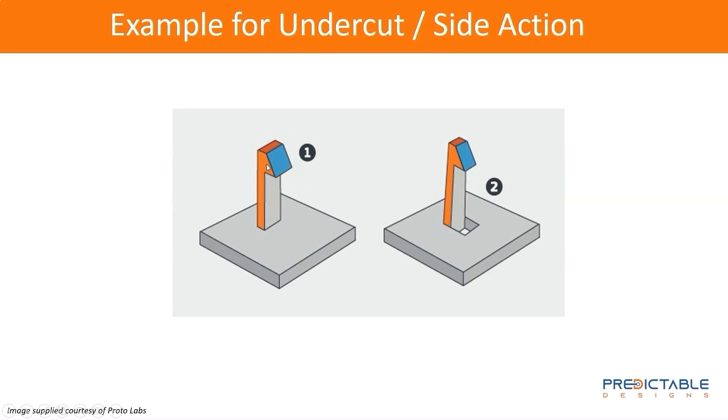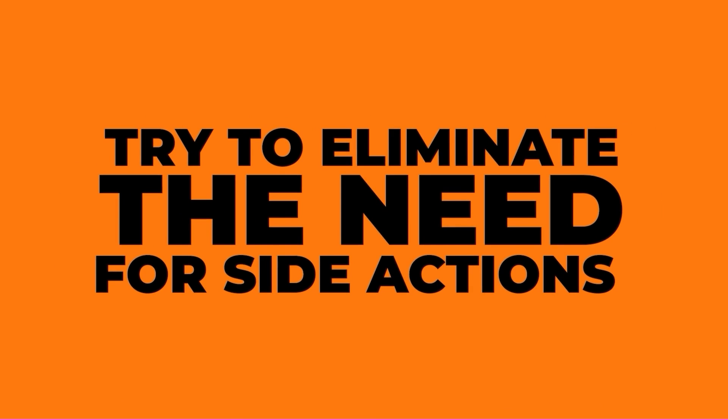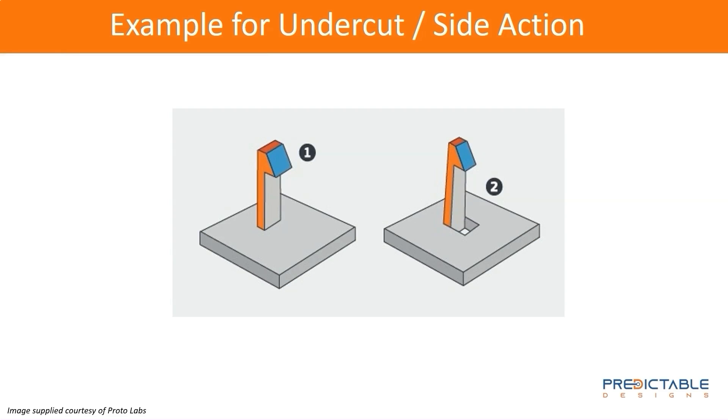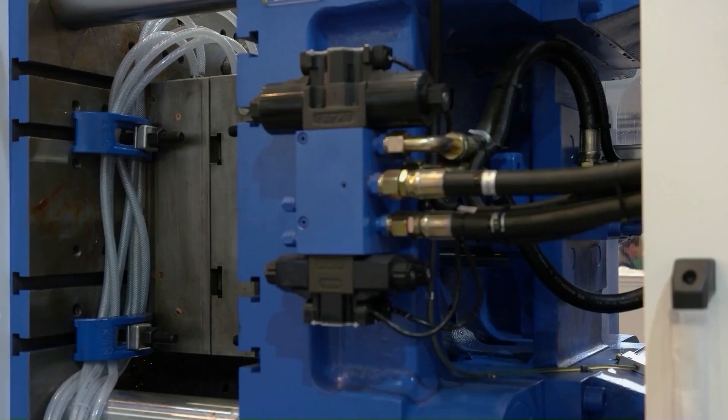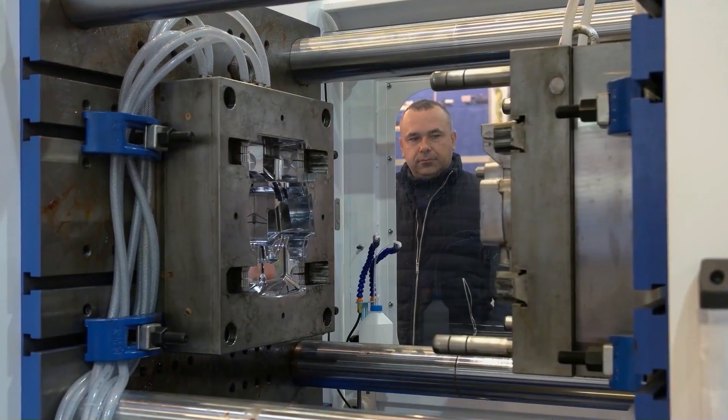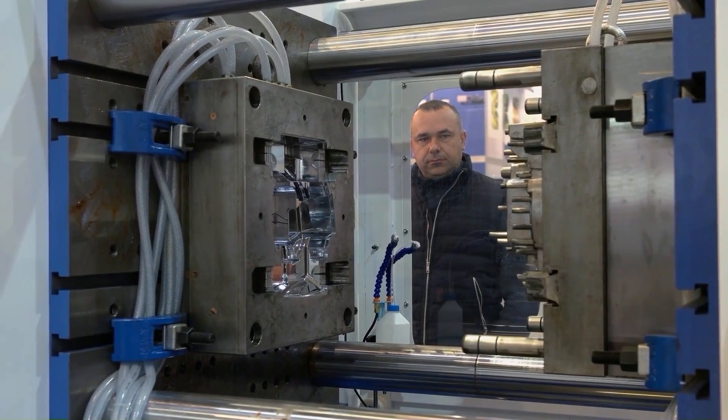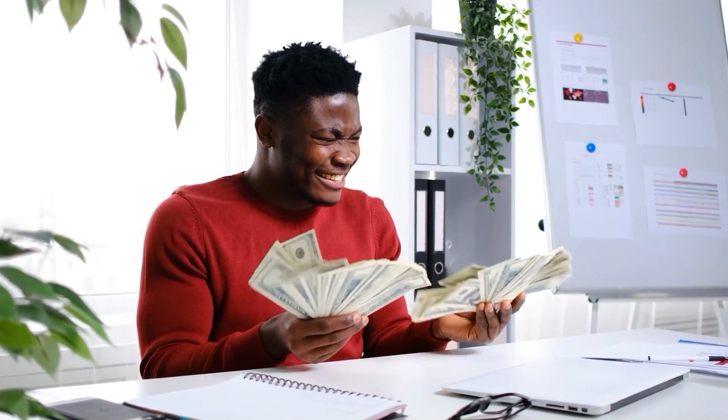The problem with side actions is they add a lot of cost to the mold and also increase the complexity of the mold. It's always to your advantage to try to do everything you can to eliminate the need for side actions in your mold. That's not always going to be possible and there are definitely products that use molds with side actions, but that's just going to really drive up the cost of the molds. Molds are already expensive, costing thousands or tens of thousands of dollars. So anything you can do to reduce that cost is going to be a substantial savings for you.